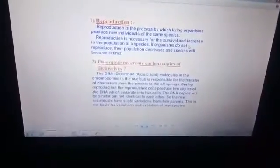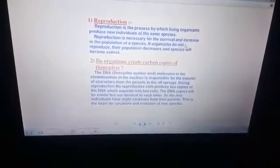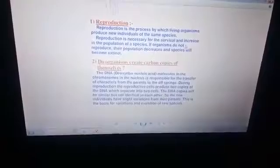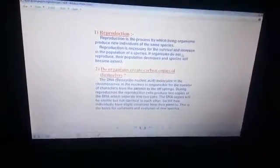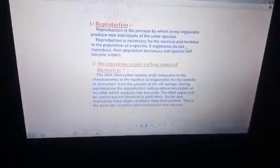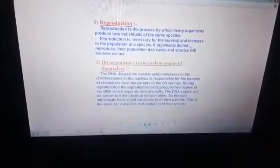Reproduction is a process by which living organisms produce new individuals of the same species. Like human beings give birth to another human being, and dogs give birth to their puppies, cats to kittens. In the same way, different animals give birth to their young ones.